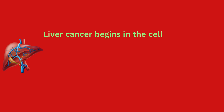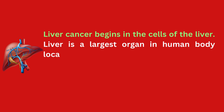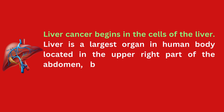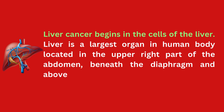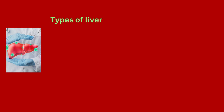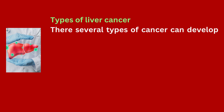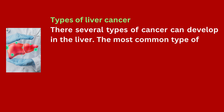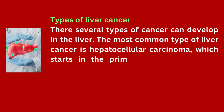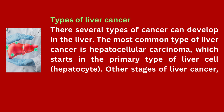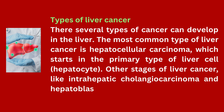Liver cancer begins in the cells of the liver. The liver is the largest organ in the human body, located in the upper right part of the abdomen, beneath the diaphragm and above the stomach. There are several types of cancer that can develop in the liver. The most common type is hepatocellular carcinoma, which starts in the primary type of liver cell called hepatocytes. Other types, like intrahepatic cholangiocarcinoma and hepatoblastoma, are much rarer.